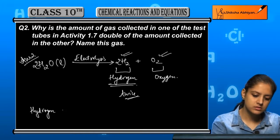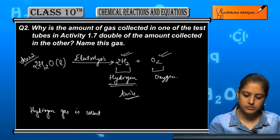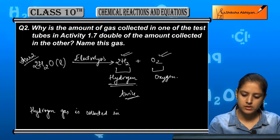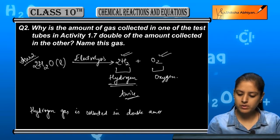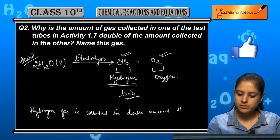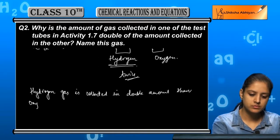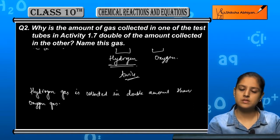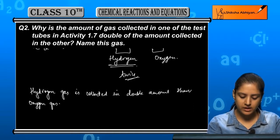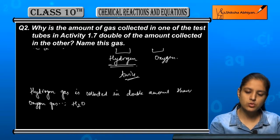Hydrogen gas is collected in double quantity than oxygen gas. The reason is that since H2O is water, it contains two atoms of hydrogen